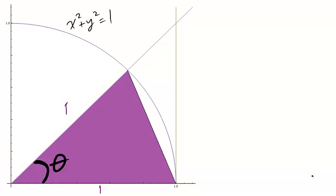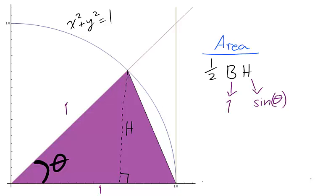We move on to the area of the purple triangle. The area of a triangle is still 1 half base times height. Our purple triangle is not a right triangle, but we can use trigonometry to find its height. We have a right triangle with angle theta and hypotenuse 1, and we are interested in the opposite length, the triangle's height. Therefore, h is sine theta. And the area of the purple triangle is 1 half times sine theta.